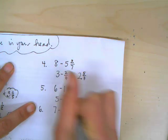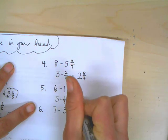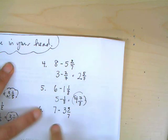6 minus 1, 5. Then take away the fractional part. So I have less than 5. I have 4 and 7 eighths.